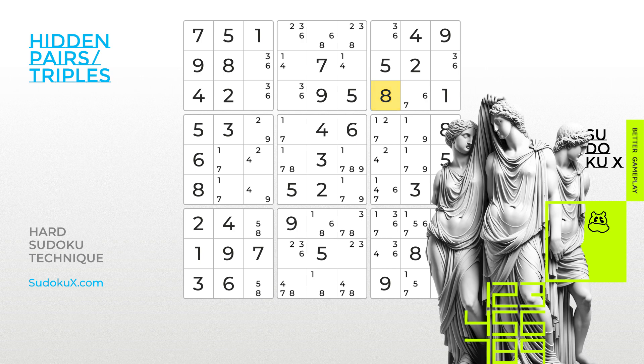Unlike its naked equivalent, a hidden single, pair or triple can be more challenging to identify. When making mistakes while filling in notes, it is likely to get stuck in finding the solution. To prevent getting stuck, Sudoku X offers the Autofill Notes option, which allows users to concentrate on solving the puzzle while the app helps to fill in the notes accurately.